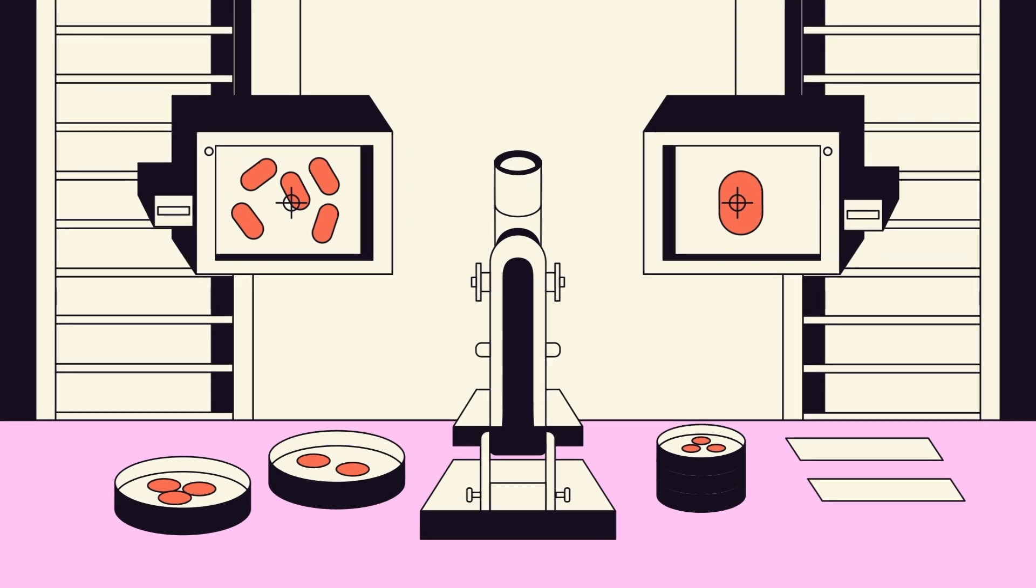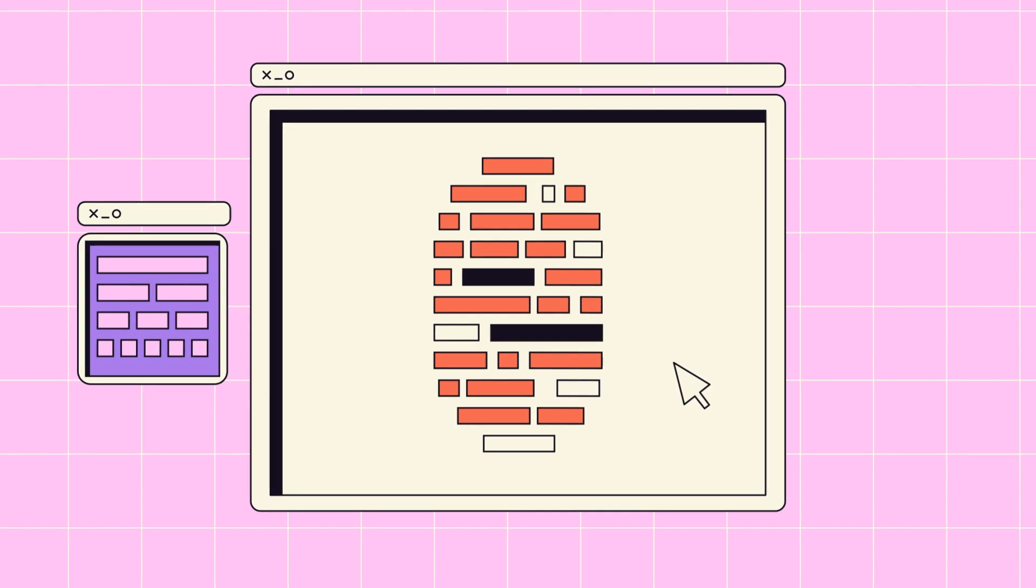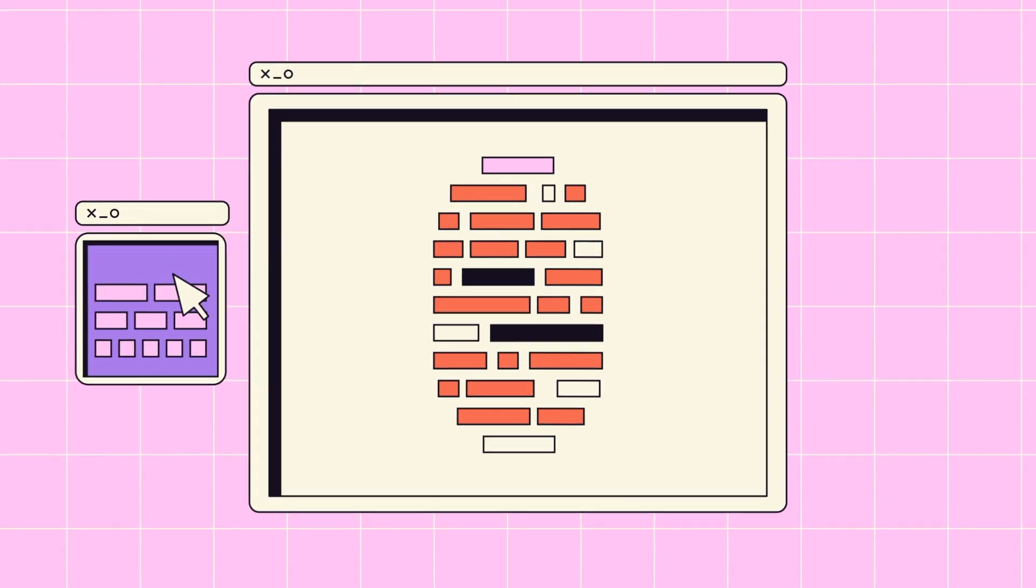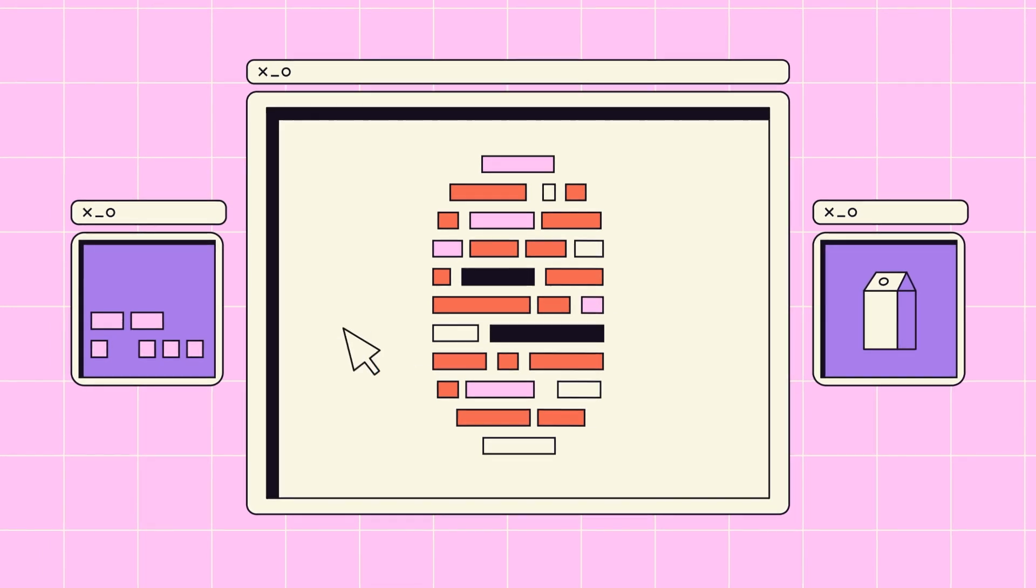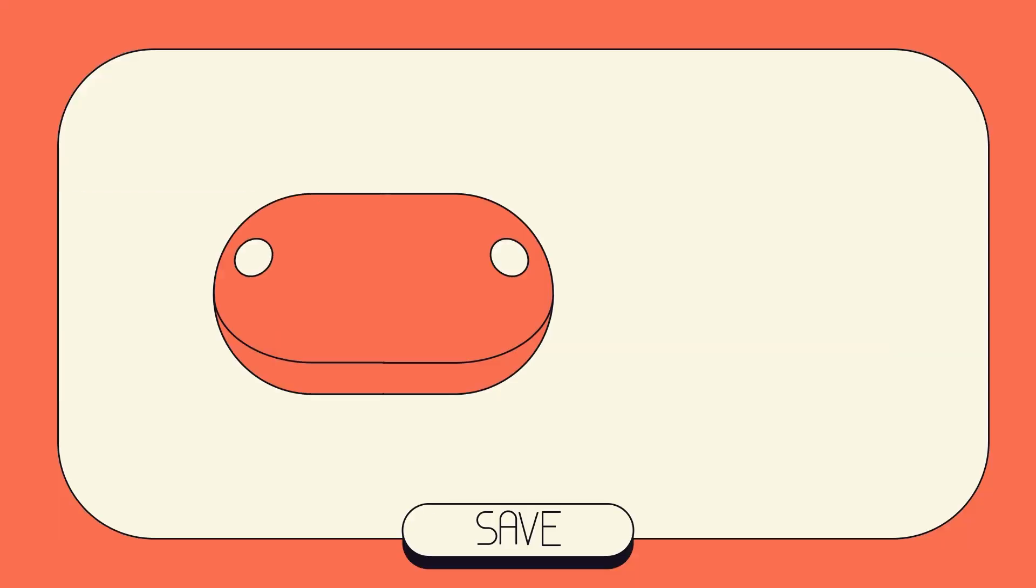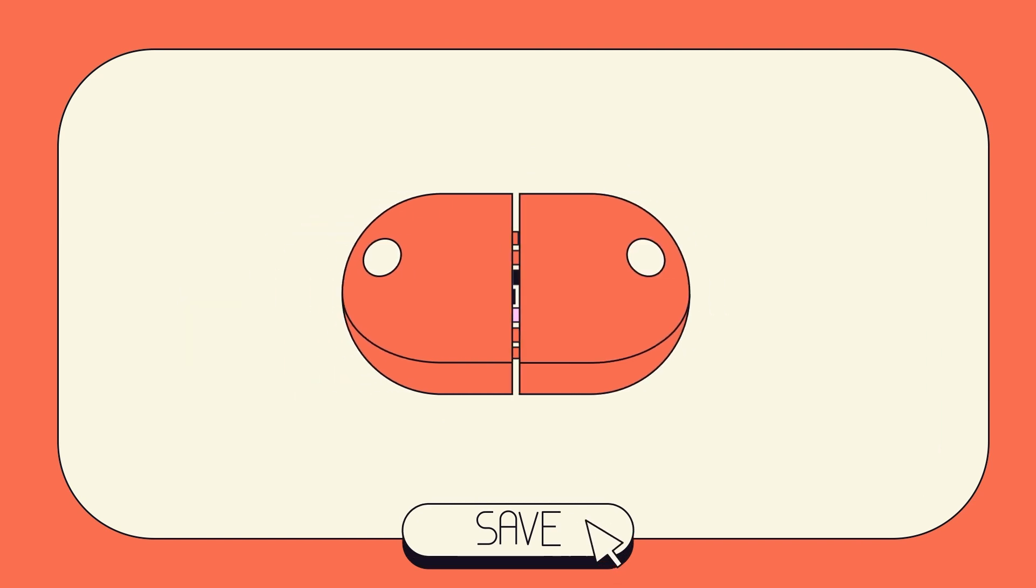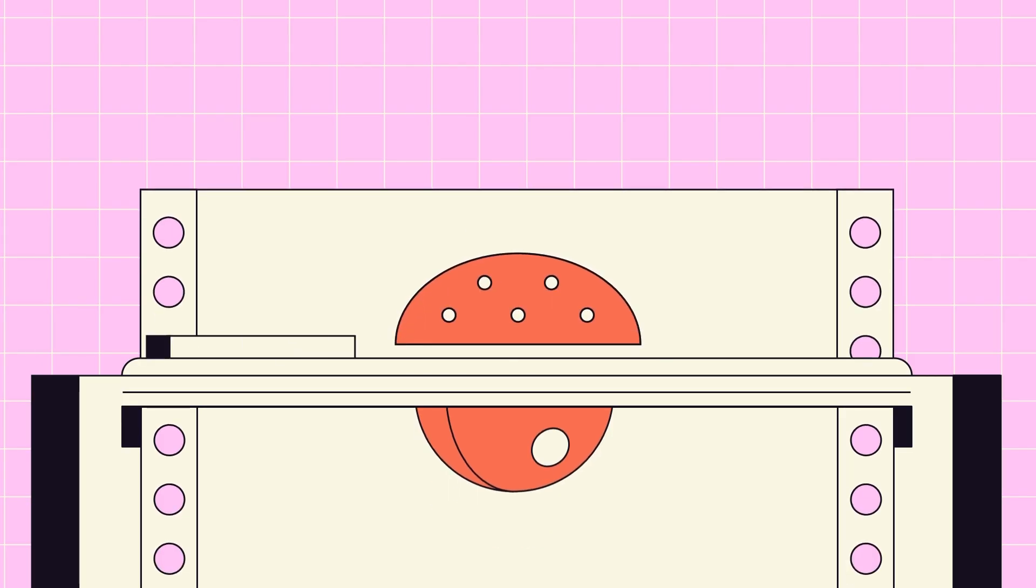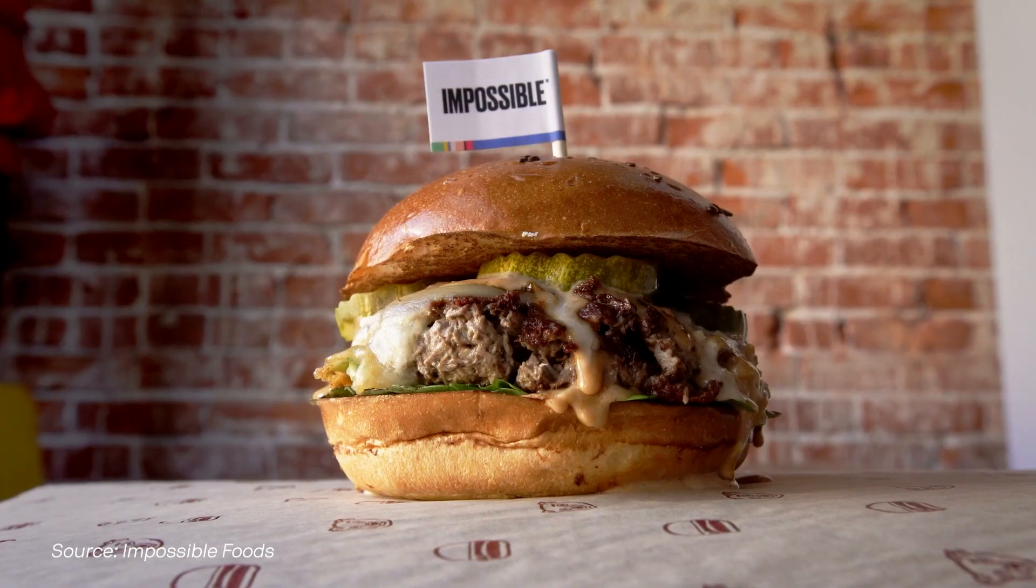So how do you program a cell? A bacteria has a 3 million-letter genome. Well, we might add a program to that to, say, produce a food protein, like an egg protein or a milk protein, so that you could get those without a cow or a chicken. We'd open the 3 million-letter genome up, and we'd put in our 20,000 letters, and then patch it back up, grow the cell, and we get to see how it works. This process has led to products like the Impossible Burger.